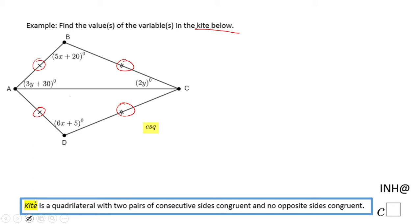One property of the kite is that we have only one pair of congruent angles. Which ones are those? If you have an accurate picture, you can really see it. These are the only two congruent angles: B and D. The other two, angle BAC and angle BCD, are not congruent.